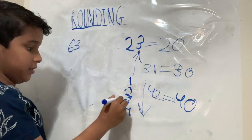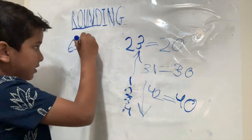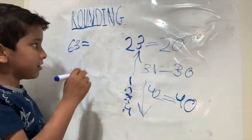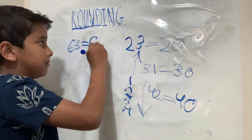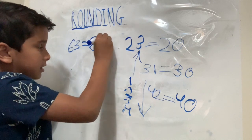It ends with 3. So rounded to the nearest ten, it will become 60.